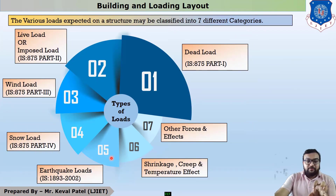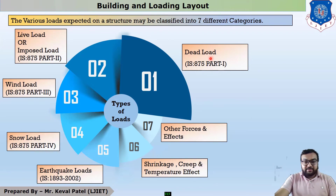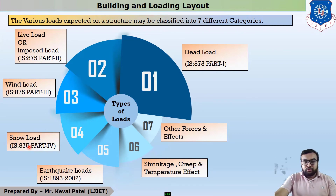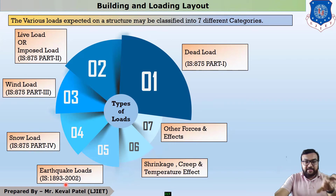Generally, there are total seven types of loads to be considered while designing any structure. First load is dead load, to be found out as per IS 875 part 1. Second load is live load, also called imposed load, to be found out as per IS 875 part 2. Third one is wind load, to be calculated as per IS 875 part 3. Fourth one is snow load, to be calculated as per IS 875 part 4. Fifth one is earthquake load, to be calculated as per IS 1893-2002, but nowadays calculated using IS 1893-2016.